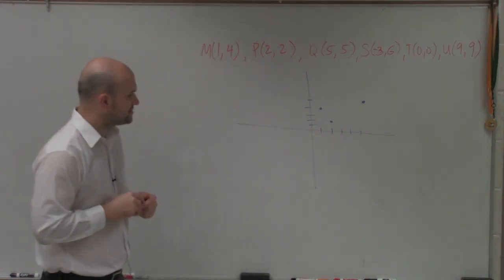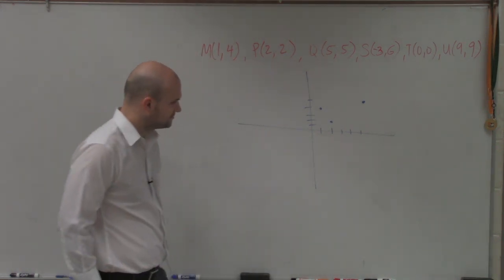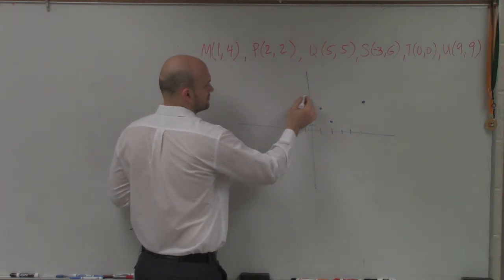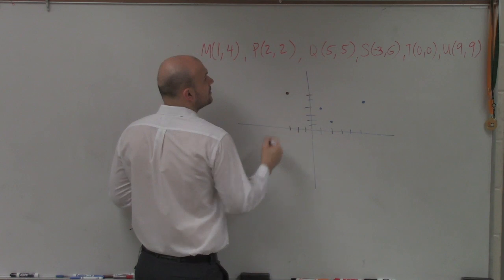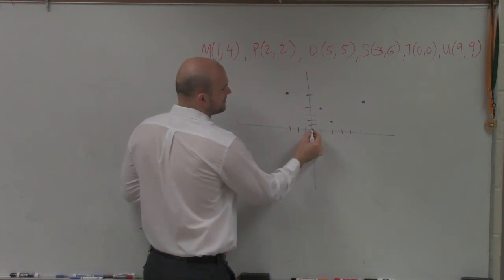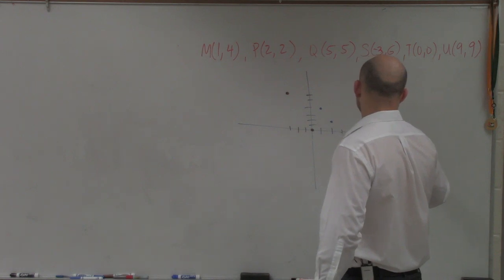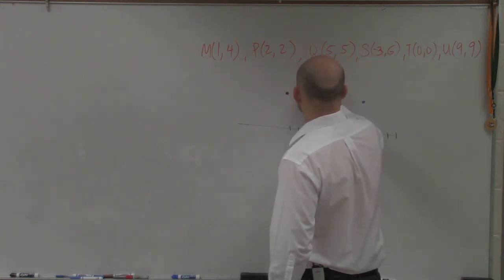Then the next one is we have (-3, 6): negative 1, 2, 3, 6. Then we have (0, 0). And then we have (9, 9): 1, 2, 3, 4, 5, 6, 7, 8, 9 and 6, 7, 8, 9.